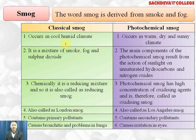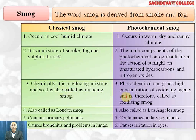Classical smog occurs in cool, humid climate, whereas photochemical smog occurs in warm, dry and sunny climate. Classical smog consists of smoke, fog and oxides of sulfur — sulfur dioxide and a small amount of sulfur trioxide. Photochemical smog is formed by the action of sunlight on unsaturated hydrocarbons and oxides of nitrogen. Sulfur dioxide is reducing in nature, so classical smog is called reducing smog, whereas photochemical oxides of nitrogen are oxidizing in nature, so photochemical smog is called oxidizing smog, which is much more harmful than reducing smog.